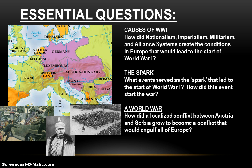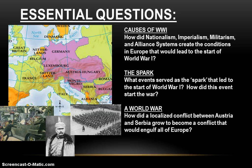So let's go to the essential questions. The causes of World War I can really be broken down into four main themes: nationalism, imperialism, militarism, and alliance systems, and we'll examine how these four things in concert created the conditions in Europe that would lead to the start of the war. Some event has to happen to set the whole thing off, so we will look at what event served as the spark that started the war. Then finally, we'll see how what should have been just a localized conflict between two countries, Austria and Serbia, grew to become World War I, the war that would engulf all of Western Europe and beyond.